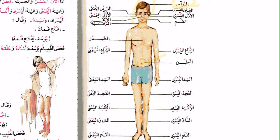Then we have العين اليسرى — the left eye. عين is eye, and يسرى is left. One thing you'll notice is that in general, all parts of the body that come in pairs are treated as feminine — مؤنث. So يسرى is the feminine version of the word أيسر, meaning 'left.'